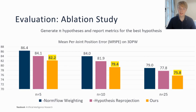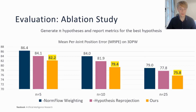Finally, we conduct an ablation study to justify our design choices. The result from our method is shown on the right-hand side of each grouping. The middle bar shows the effect of retraining the network with the hypothesis reprojection loss omitted. The left-hand side shows the results of additionally removing the normalising flow weighting used in our quantisation scheme. The results indicate that removing each component significantly decreases the performance, which validates our design choices.